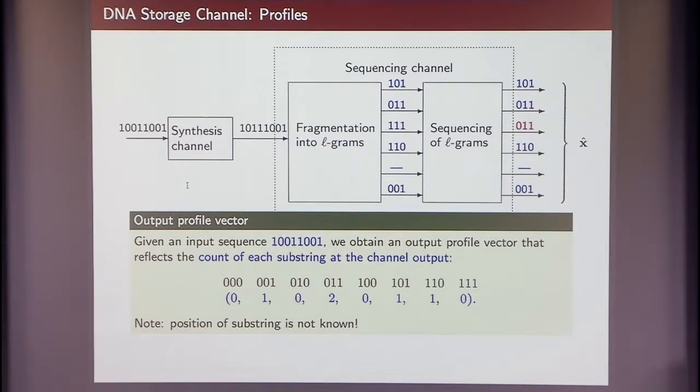And what I observe is a bunch of substrings that have potentially propagated error from the synthesis channel and potential sequencing errors and potentially missing substrings. And what makes sense to look at this model is the so-called profile vector or type vector of a substring. Because if I'm giving an input sequence 1, 0, 0, 0, like in this example, the output of the channel will be basically a count on how many substrings of certain type did I observe in the mixture. So for example, if I look at this string here, I see that I observed 1, 0, 1. I'll write the 1 here.